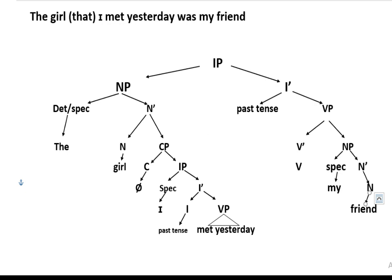In terms of the complementizer phrase, 'the girl I met yesterday' — all of this is a determiner phrase. Then in the complementizer phrase, if we don't have a complementizer explicitly, we still have a CP, then IP. For example: 'I met yesterday' — which girl? 'The girl I met yesterday.' Then the complementizer phrase — where we don't have a complementizer — then IP.